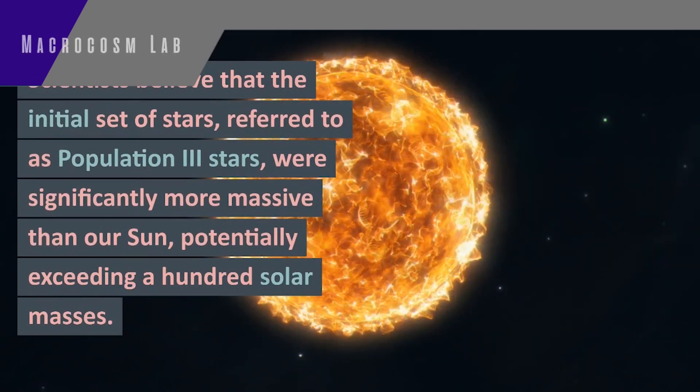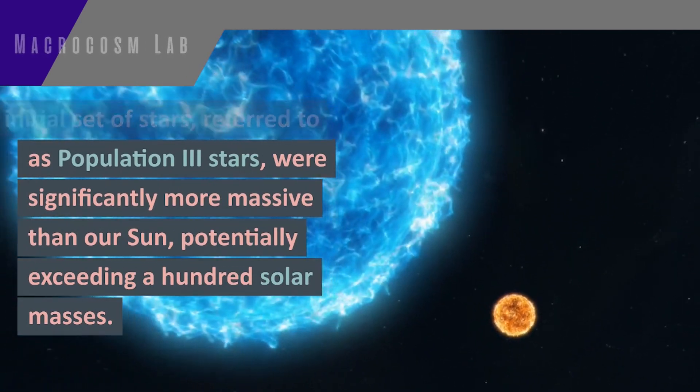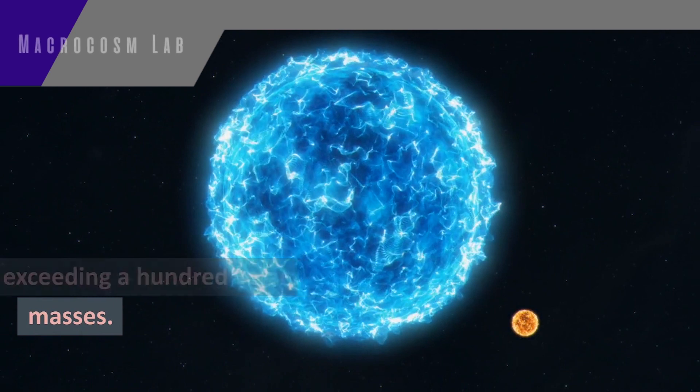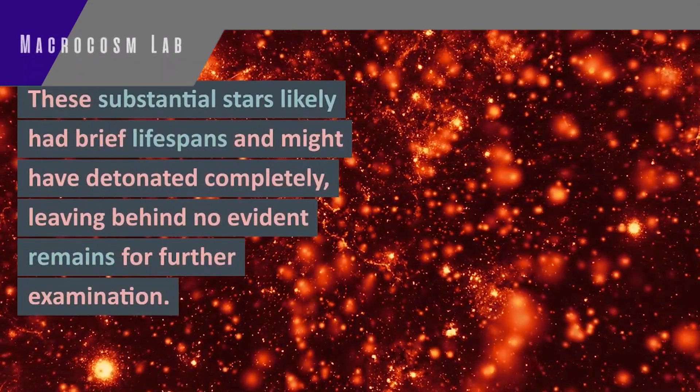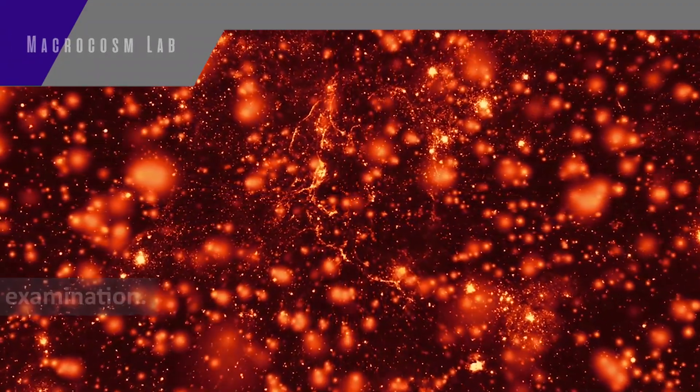Scientists believe that the initial set of stars, referred to as Population III stars, were significantly more massive than our sun, potentially exceeding 100 solar masses. These substantial stars likely had brief lifespans and might have detonated completely, leaving behind no evident remains for further examination.